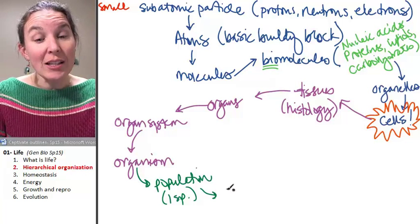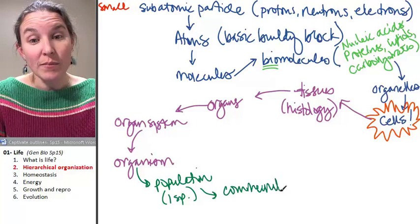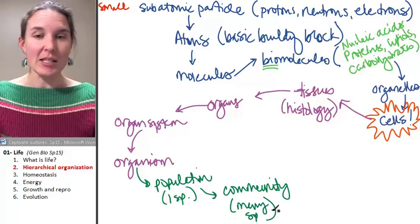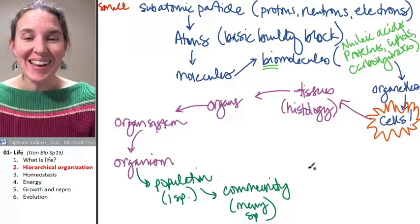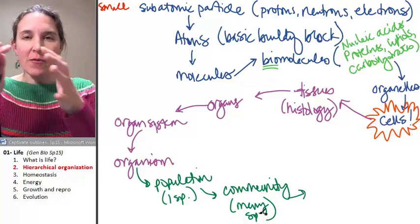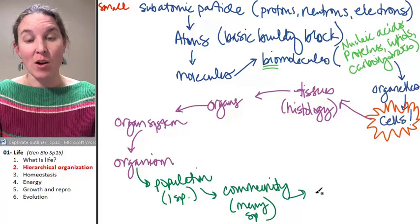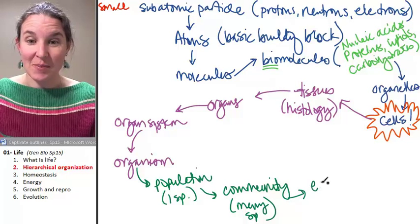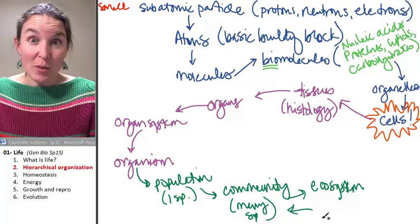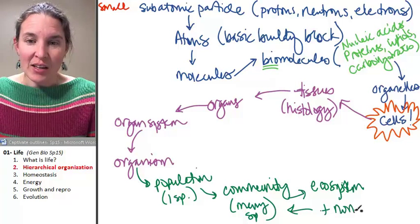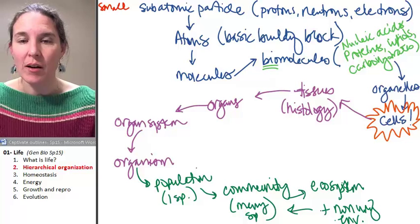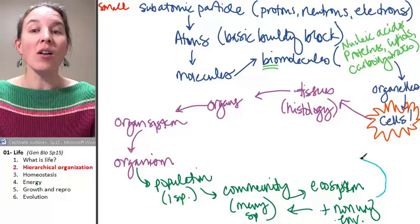These are all different species. So we actually live in a community, a group of multiple species, many species living together. Our community, if we look at all these different species and their non-living environment, then we have an ecosystem. An ecosystem is a whole bunch of communities plus the non-living environment. And then the whole thing, all of it makes up the biosphere.